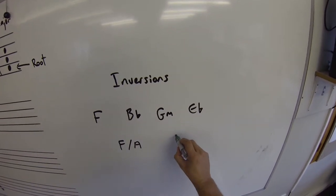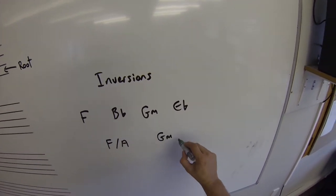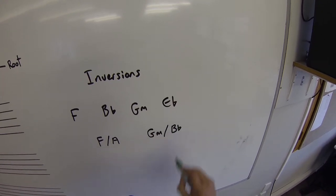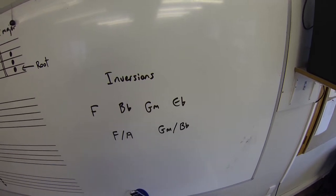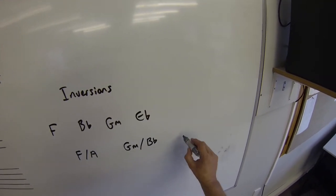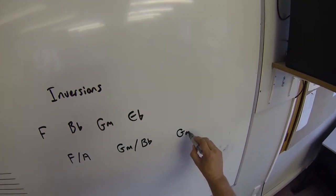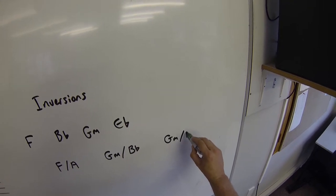In the same way, we could take our G minor and we could make it over its B flat, which used to be its middle note, but now it's going to be the lowest sound that we hear. We could take the top note of the G minor, which is the D, and make that the bass note.